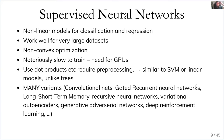There are many variants of neural networks. We'll only talk about the most vanilla ones and convolutional neural networks. But there's also gated recurrent neural networks, long short-term memory, recursive neural networks, variational autoencoders, generative adversarial networks, deep reinforcement learning, and many more — probably each could have its own full course.